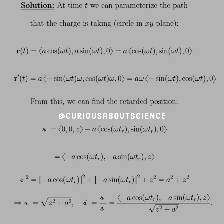Taking the derivative of this parameterization gives us the velocity. We get a factor of omega out front — the x-component becomes negative sine and the y-component remains positive cosine, so the velocity is a·omega·(-sin(ωt), cos(ωt), 0). From this, we can find the retarded position. The script R vector, evaluated for a field point on the z-axis at position z, is z minus the particle position: script R = (−a·cos(ωt_R), −a·sin(ωt_R), z).